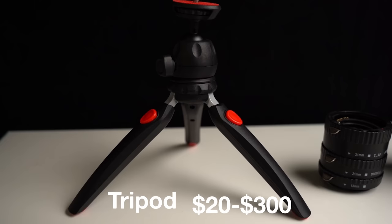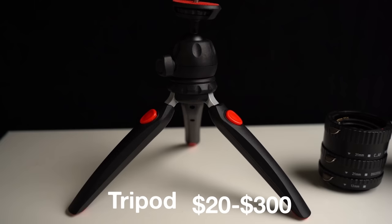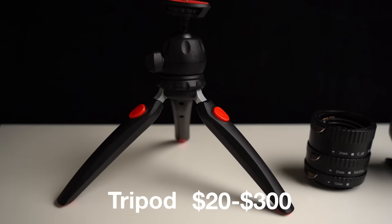The first thing you're going to want to have is a tripod. Whether it's a small one like this or a full-size one, this is going to let you be stable and really utilize your shutter speed to get the best results possible.